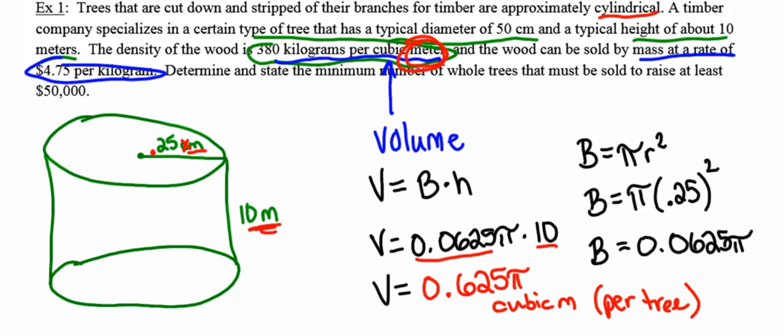Now I'm going to leave my volume in terms of π. But if you would feel more comfortable, feel free to multiply 0.625 times the π button on your calculator. However, if you choose to do that, I need to see all of the decimal places in your work as you proceed through the problem. That's the volume in each tree trunk.